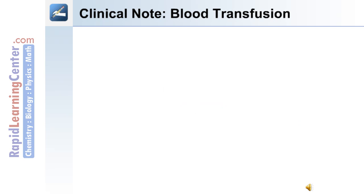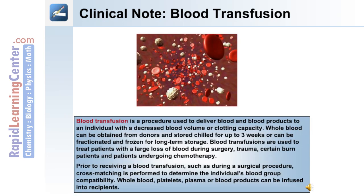The following is a clinical note on blood transfusion. Blood transfusion is a procedure used to deliver blood and blood products to an individual with a decreased blood volume or a decreased clotting capacity. Whole blood can be obtained from donors and stored chilled for up to three weeks, or for long-term storage, it can be fractionated and frozen. Blood transfusions are used to treat patients with a large loss of blood during surgery, from trauma, certain burn patients, and patients undergoing chemotherapy.